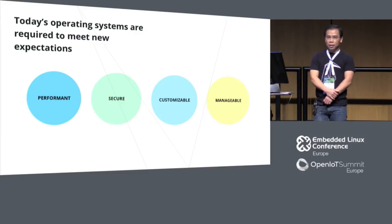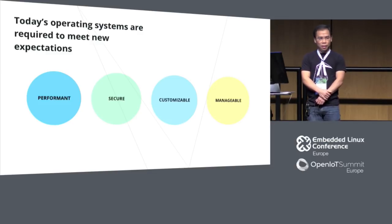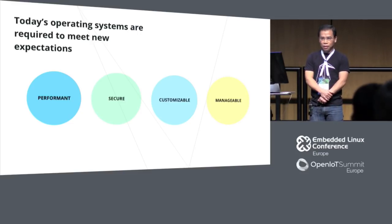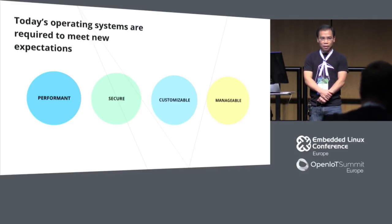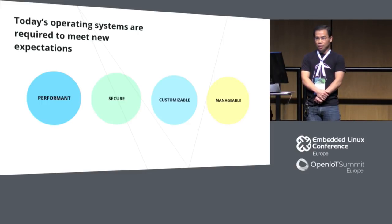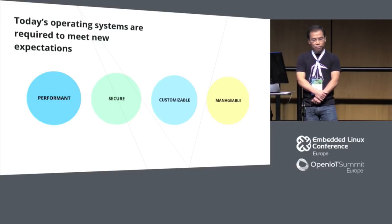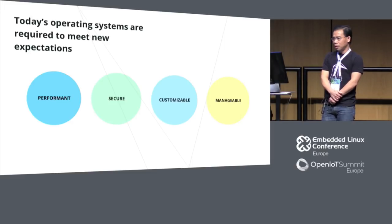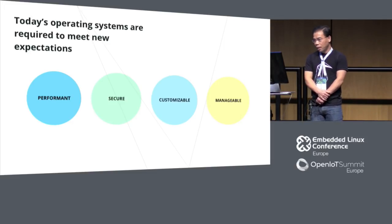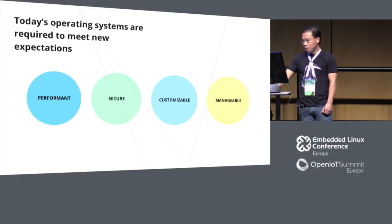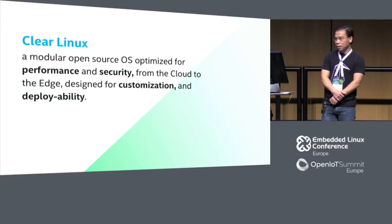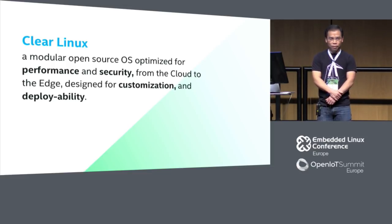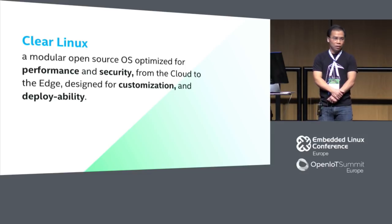Why Clear Linux? As more and more intelligent devices and systems get connected to the Internet, we believe the operating system running on these devices must meet the demands of modern-day usage — it should be performant, secure, easily customizable, and easily manageable. Clear Linux is an open source operating system, completely open, optimized for performance and security, and designed to work in any range of environments, from the cloud all the way to the edge. It is very easy to customize and deploy.